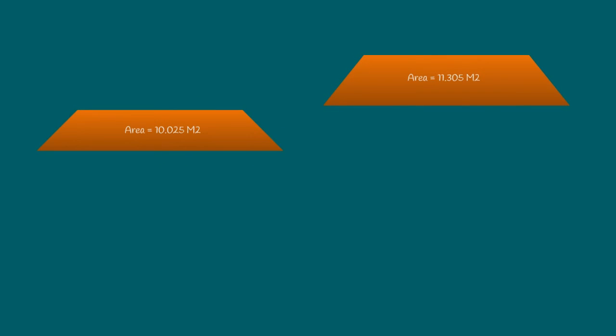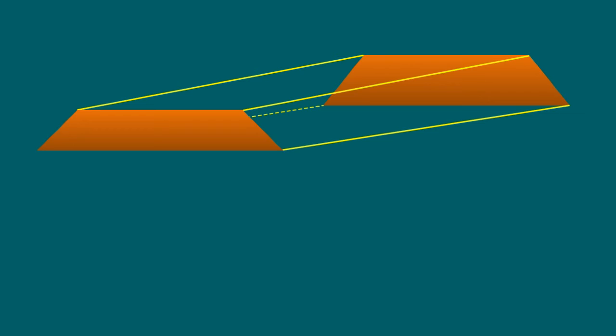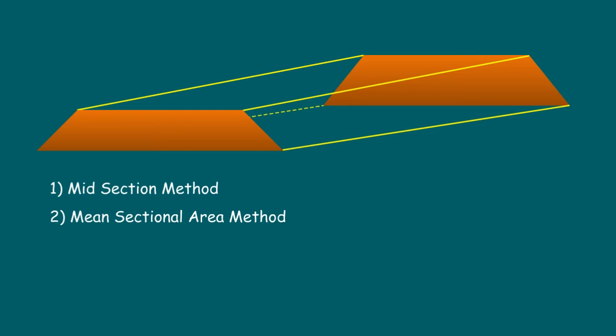Nowadays, computer technology has improved a lot. There are many methods of calculation possible with these technologies, such as quantities calculated through AutoCAD, MS Excel, and many specialized dedicated software available for road projects. However, here we will see the types of methods commonly used in university exams and public service exams. Those are: 1. Midsection method, 2. Mean sectional area method, 3. Prismoidal method. We will see these three types in detail.